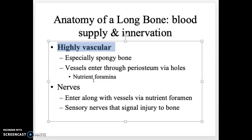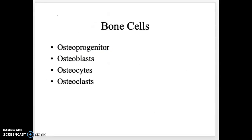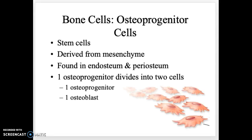Nerves are also found prominently in long bones. They also pass through the nutrient foramina and into the central canals. The nerves function mainly to signal if there is any type of injury to the bone.